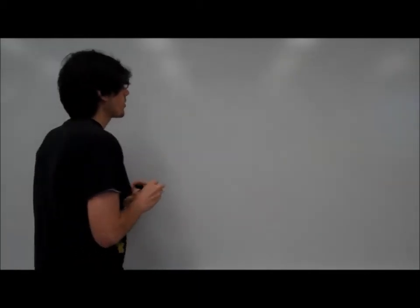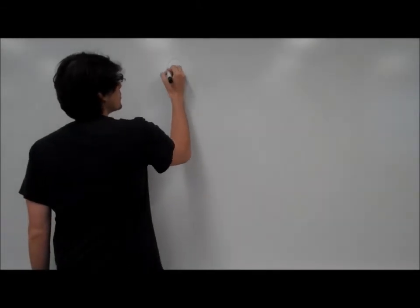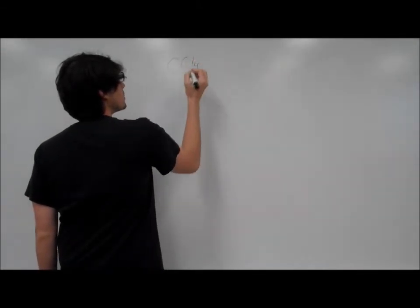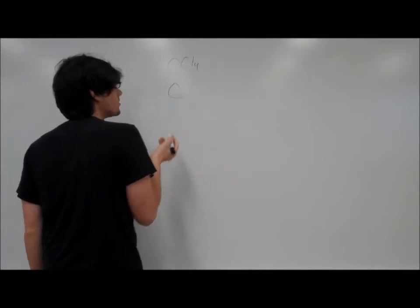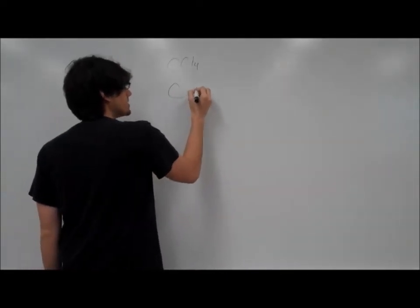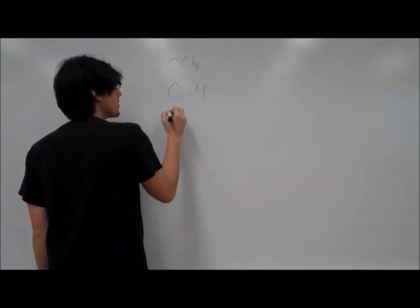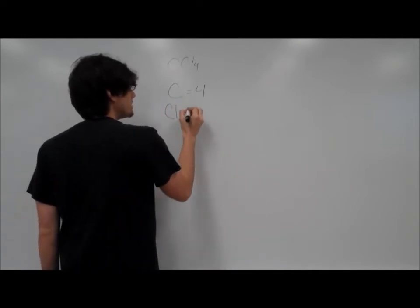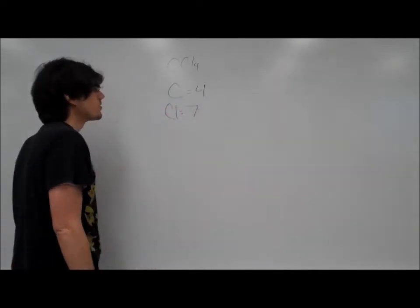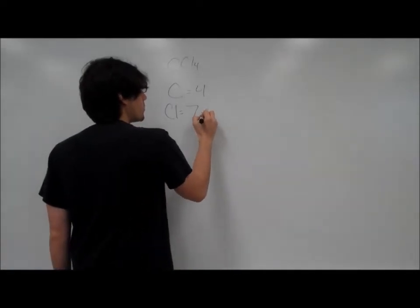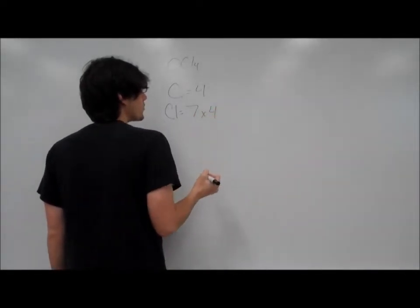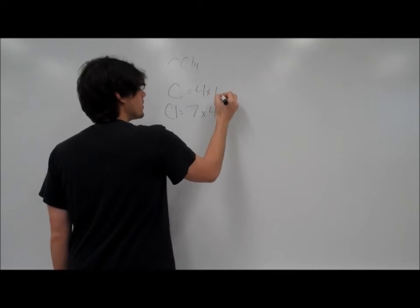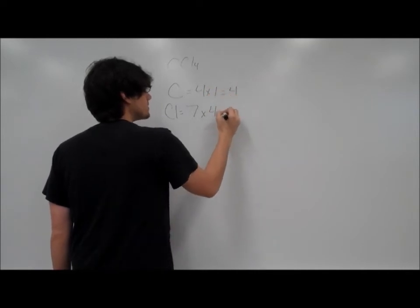We'll first determine the amount of valence electrons we have. We have CCl4. We know that carbon is in the fourth group, which means it has four valence electrons. Chlorine is in group seven, which means it has seven valence electrons. We have four chlorines for one carbon, which gives us four electrons and 28.